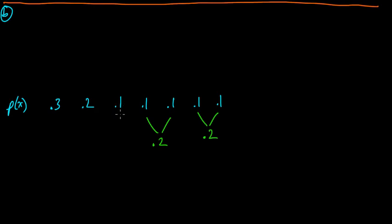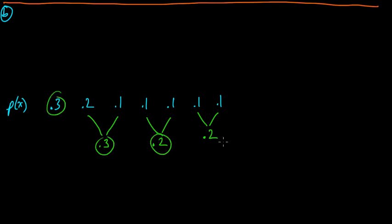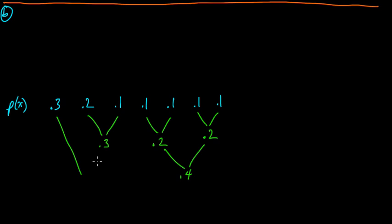We take these two guys, add them, and get 0.2. Now we take two of the smallest again — that would be this point one and this one, or various combinations. Let's pair it with this guy here — oh, and that's 0.3 now of course. We sort again among 0.3, 0.3, 0.2, and 0.2. The two 0.2s are smallest, so we combine those to get 0.4, then the two 0.3s give 0.6, and then those are joined to make 1.